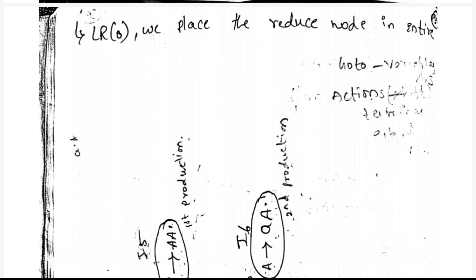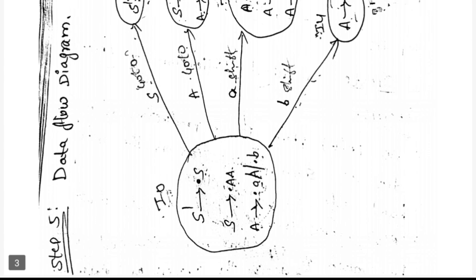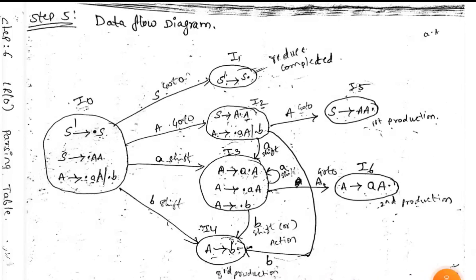Now we will see how the data flow diagram is constructed. First, we write the canonical collection items by adding a dot to our production rules. The items are: S' → •S, S → •AA, A → •aA, and A → •b. We need to shift the dot to the next position and complete the reduce.